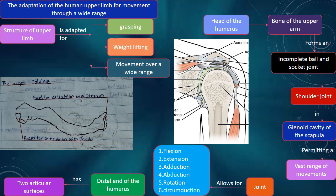The joint allows for flexion, extension, adduction, abduction, rotation, and circumduction.